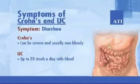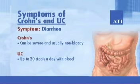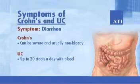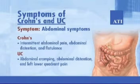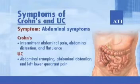The signs and symptoms of Crohn's disease and ulcerative colitis are similar. Diarrhea: with Crohn's, it can be severe and usually non-bloody; with UC, up to 20 stools a day with blood. Abdominal symptoms: with Crohn's, intermittent abdominal pain, abdominal distension, and flatulence; with UC, abdominal cramping, abdominal distension, and left lower quadrant pain.